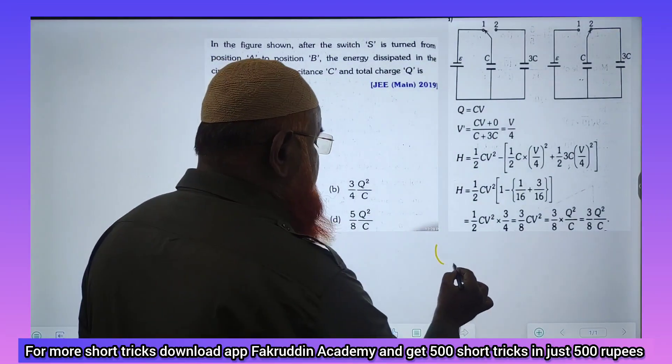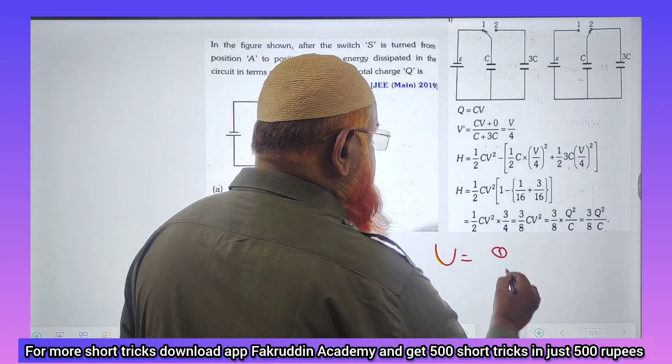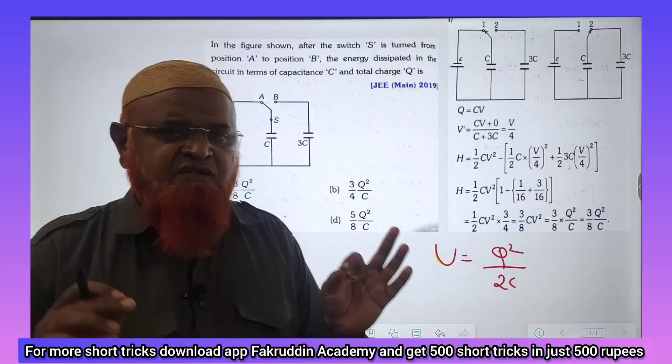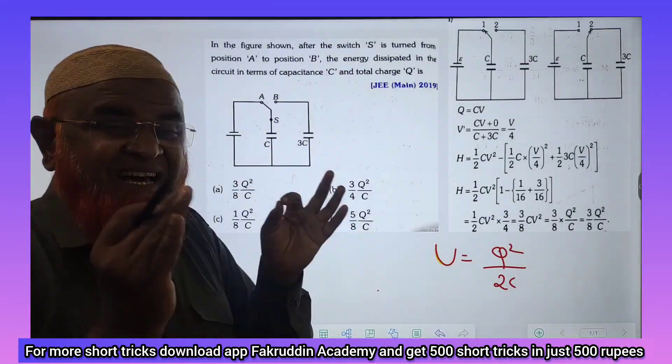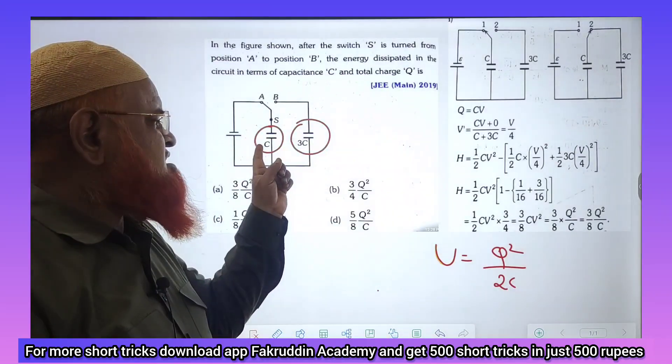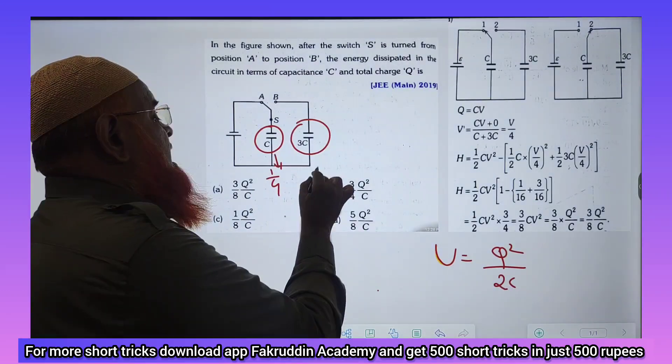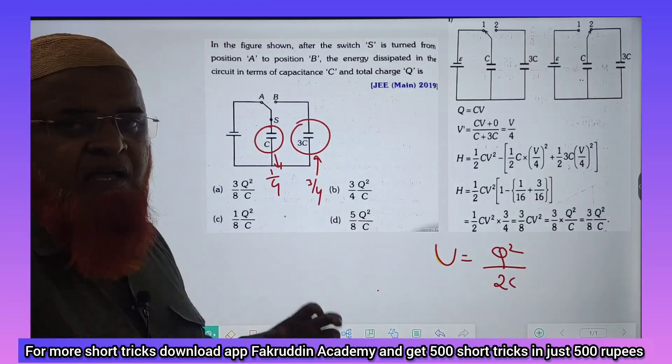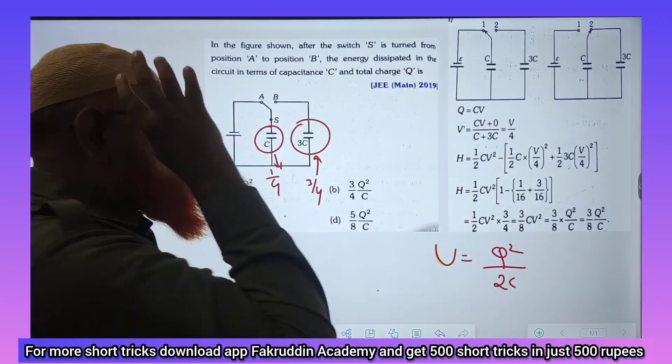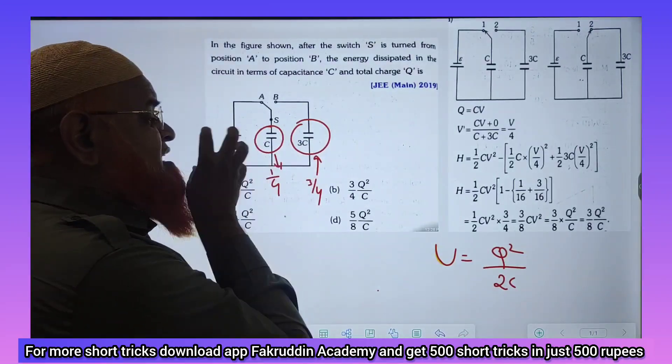First of all, what is the formula for energy? The formula for energy can be taken as Q square by 2C. So what is the ratio of energy stored in this capacitor and in this capacitor? This is 1/4 and this is 3/4 of the energy. As this capacitor is having capacitance C, it is having 1/4 of the energy, and this capacitor which is having 3C as the capacitance is having 3/4 of the energy stored.